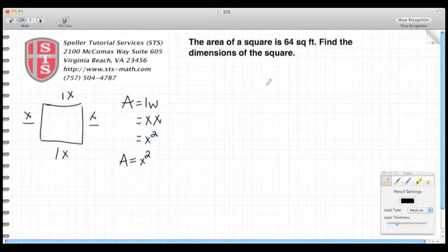Now we're going to take the information that's stated in our word problem. We know the area is 64 square feet, and that's equal to X squared.